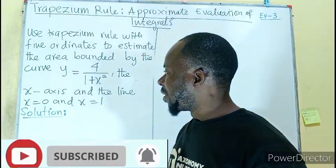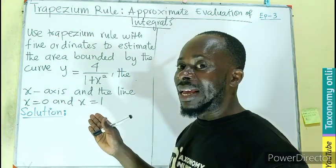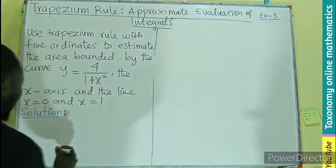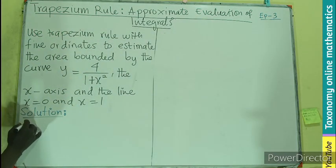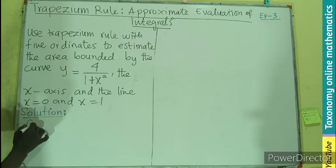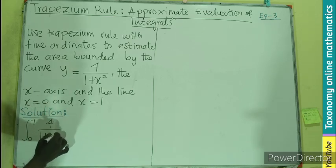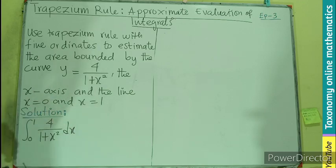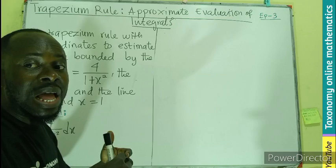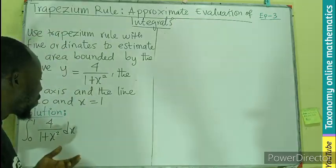If it were direct integration, alright, but you can see there's no integral sign here, so we need to find the integral. We know that this is going to be the integral from the lower limit to the upper limit: ∫₀¹ 4/(1+x²) dx. This is what we are asked to find—its approximate value.